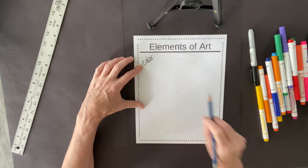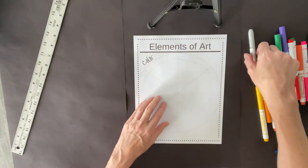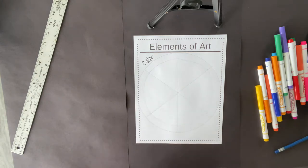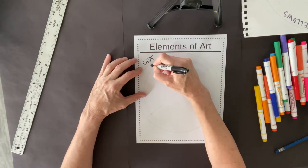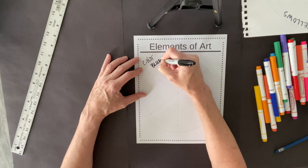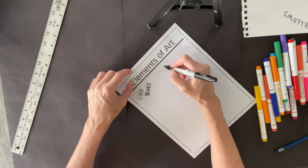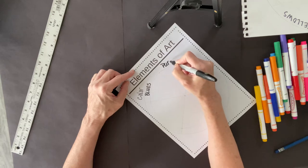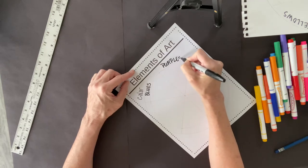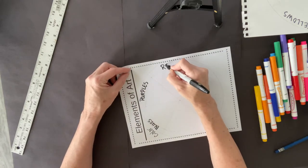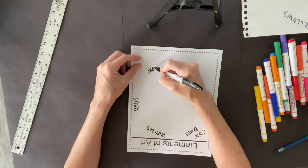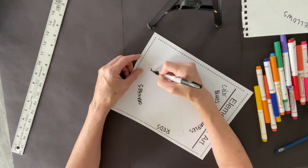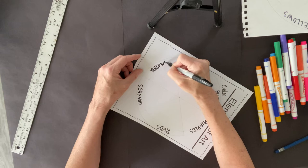and then I'm going to label them. So I'm going to do my primaries and my secondaries. So what I want to do is I want to start with blue or blues, purples, reds, oranges, yellows, and greens.